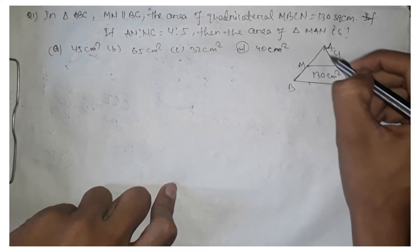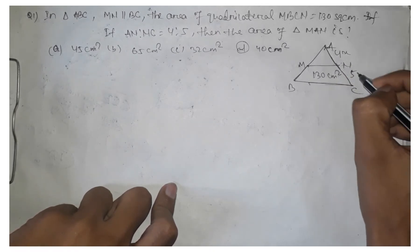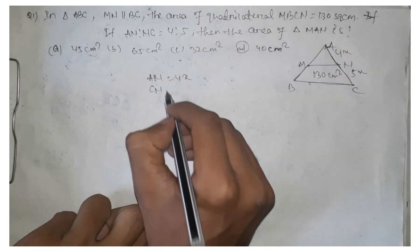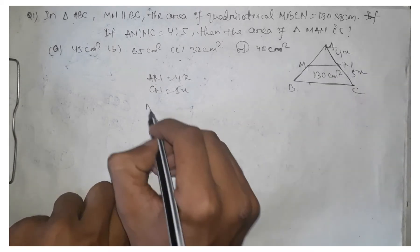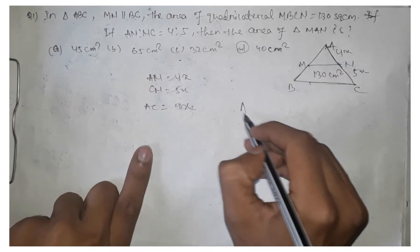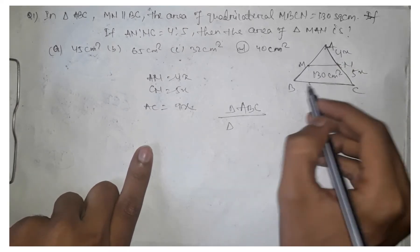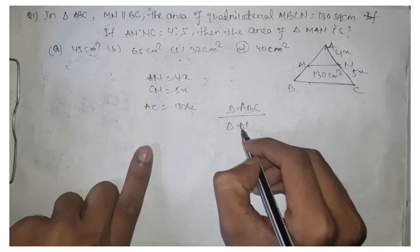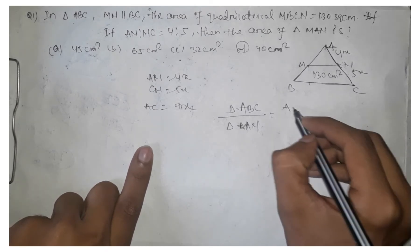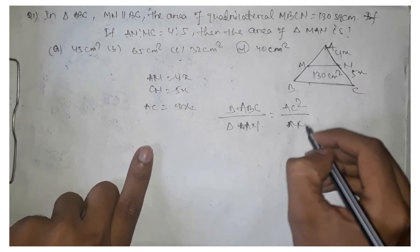Let AN equal to 4x, then CN is equal to 5x because the ratio is 4 is to 5. So AC will be equal to 4x plus 5x, meaning AN plus CN is equal to 9x. We know that the area of triangle ABC divided by the area of triangle AMN is equal to AC square over AN square.